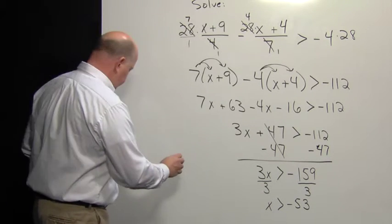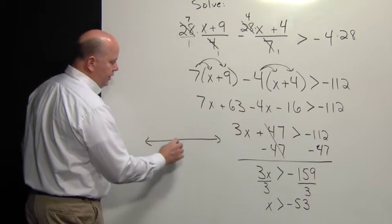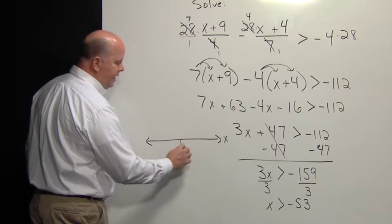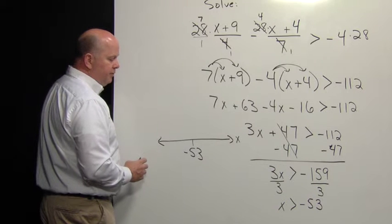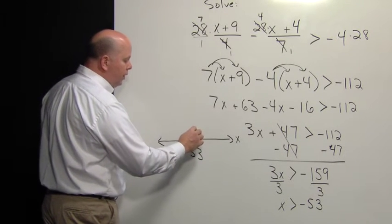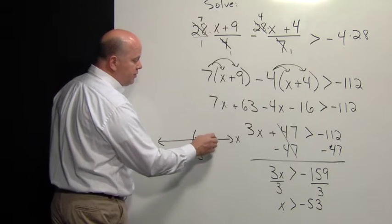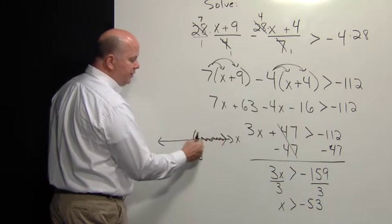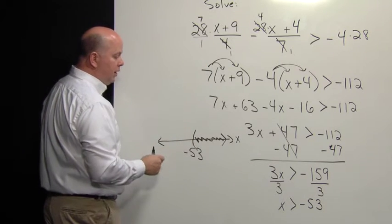If we're asked to graph that solution set, we get our number line and label it as X, since that's our variable. We want greater than negative 53, so we're going to have an open circle or a parenthesis, and we're going to shade to the right to describe our solution set. Every point on this line to the right of negative 53 represents a solution to this original inequality.